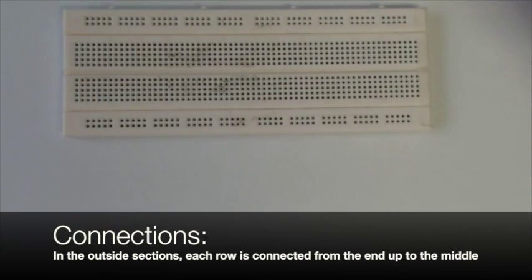In each outside section, we have another two rows each. However, even though these are also spaced in groups of five, each row is one long connection from here right until here. That means that everything in this row is connected, everything in that row is connected and so on.